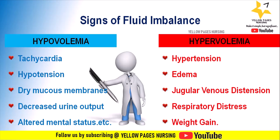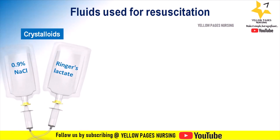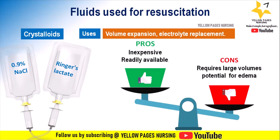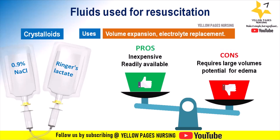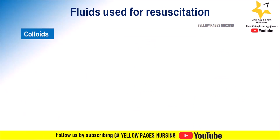Crystalloids are simple salt solutions like saline, similar to the fluid in your body, and help increase blood volume quickly. Examples include normal saline (0.9% sodium chloride) and Ringer's lactate. The main uses of crystalloids are volume expansion and electrolyte replacement. The main advantage is that they are inexpensive and readily available. Disadvantages include the need for larger volumes and potential for edema.